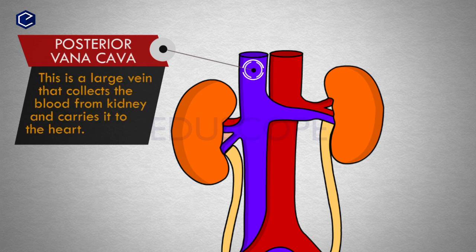The posterior vena cava is a large vein that collects the blood from the kidneys and carries it to the heart.